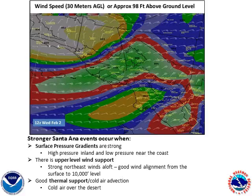First, we look for strong surface pressure gradients. This means that we have strong high pressure to the northeast of us and lower pressure along the coast. We also need upper level wind support to get the really strong winds — when I say strong, I mean that the winds are gusting to 60 miles per hour or higher across the area. Good wind support also means that we have northeast wind alignment with strong winds from the northeast all the way from the surface up to around the 10,000 foot level.